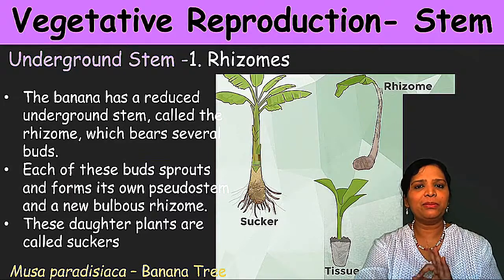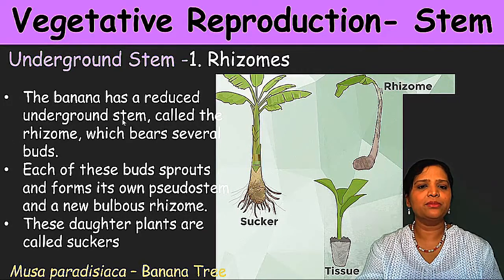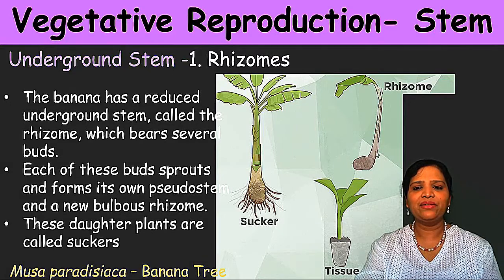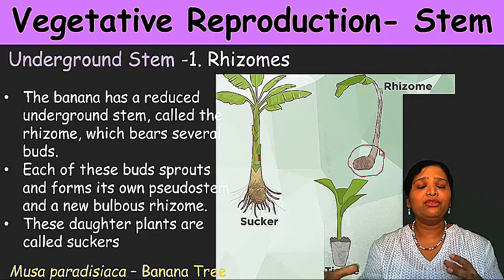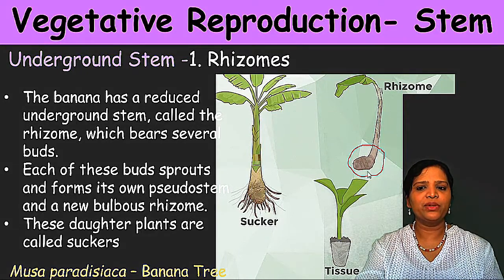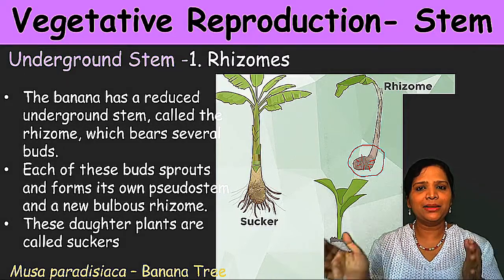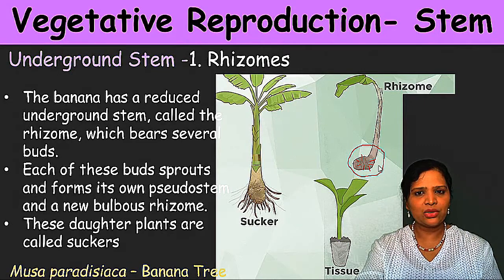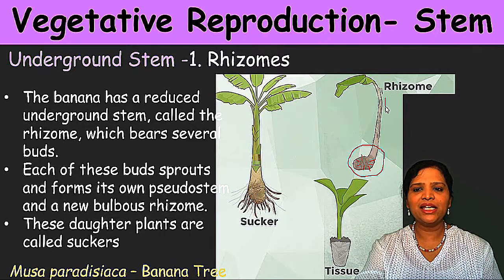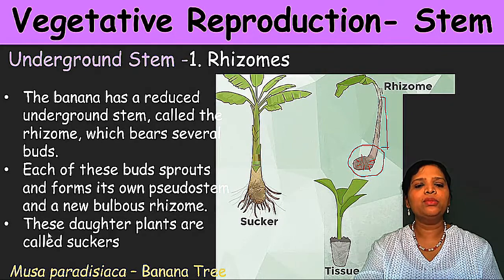We have three very good examples for rhizomes. The first is banana, where banana has a reduced underground stem called a rhizome which bears several buds. If you want a banana in your garden, you plant the rhizome part only. This rhizome contains starch and nutrients needed for the plant to grow. Once we plant the rhizome, from that arises the pseudostem of the banana, and from that the plant comes up. The biological name for banana is Musa paradisiaca.